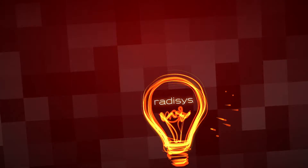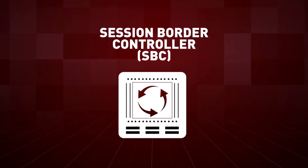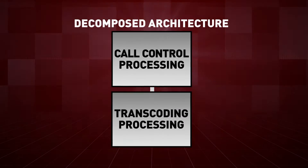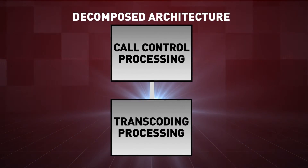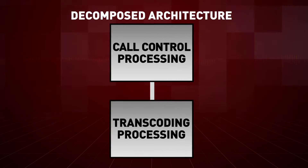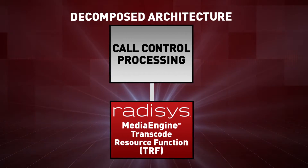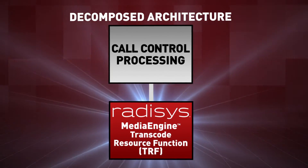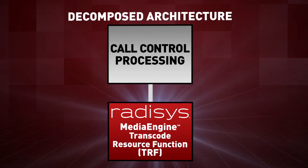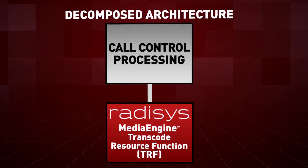RAID Assist offers an alternative approach. This solution is to embrace a decomposed architecture, separating call control functions from transcoding processing, referred to as adjunct transcoding. Transcoding capacity can be added using Media Engine Transcode Resource Function products, a solution specifically designed to support scalable multimedia processing while future-proofing your network.